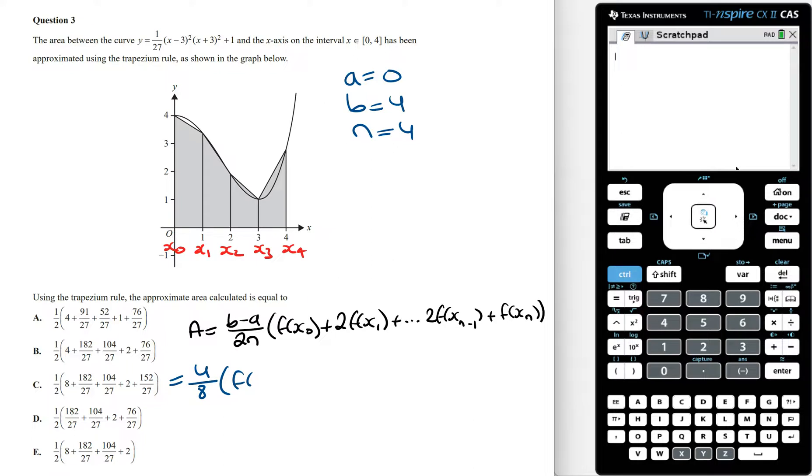which is going to be f of 0, and then plus 2 times f of x1, which is going to be 2 times f of 1, and then plus 2 times f of 2, and then plus 2 times f of 3, and for the last one, it's just going to be f of 4.